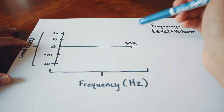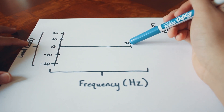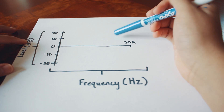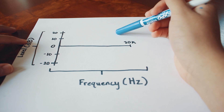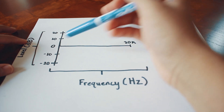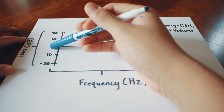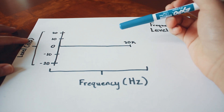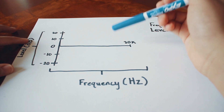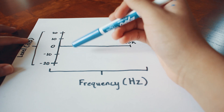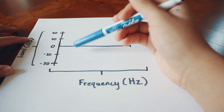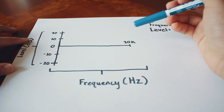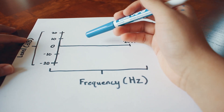Your graph might end up looking different than this — this is just a little example. When we're talking about EQ, we're not actually changing the pitch of our audio at all. What we're actually doing is changing the volume of certain pitches to accentuate frequencies that sound good and to lower the volume of frequencies we don't really want to hear as much.